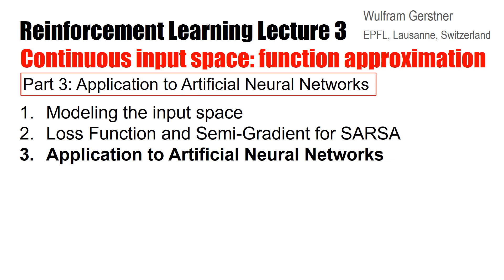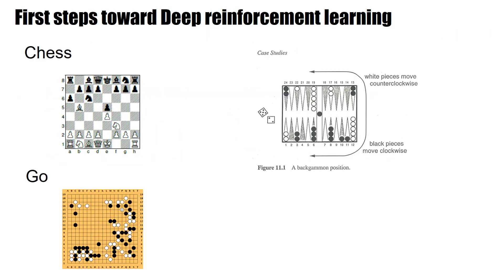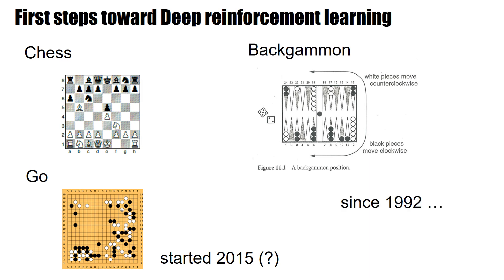Welcome to the lecture series on reinforcement learning. In this video we explore how we can represent input and output with an artificial neural network. The famous applications of reinforcement learning use deep artificial neural networks, be it for chess and Go, and these approaches became famous around 2015, but in fact they have a much longer history. Backgammon was analyzed with artificial neural networks already in 1992.